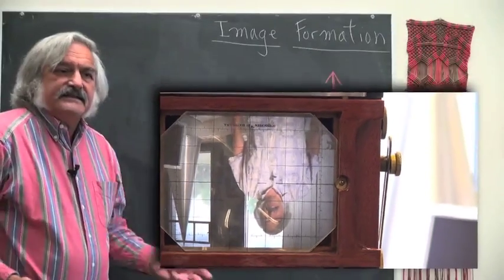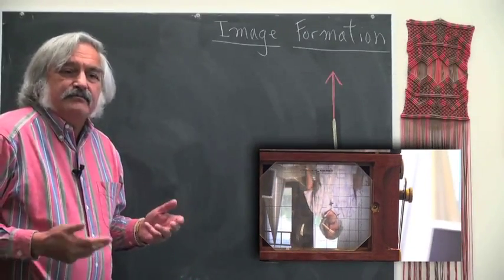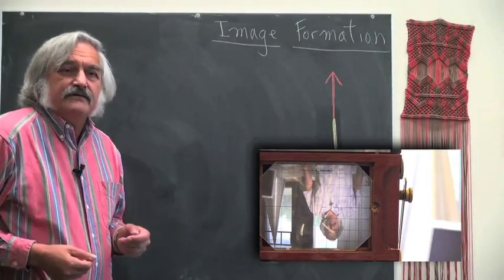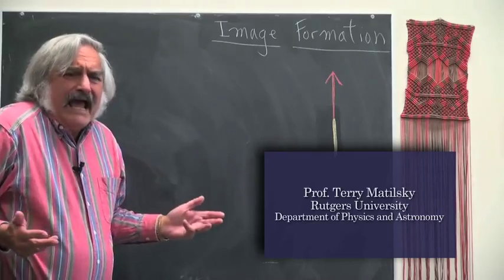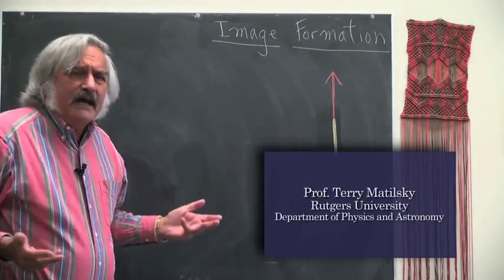So we've just seen that the image that we produce inside of our view camera is upside down. Now, how can this happen? Why does it happen?